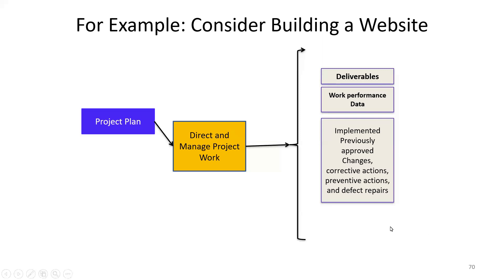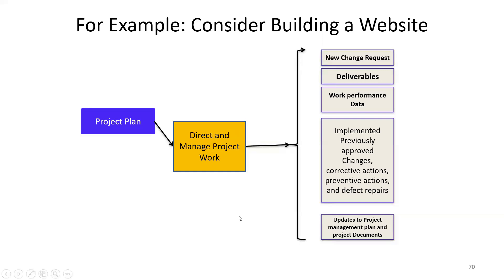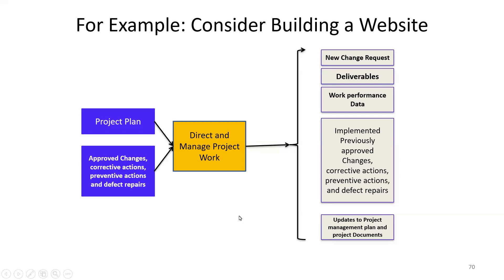As a lot of work gets done, we update project documents and the project management plan. If a new change request comes in, approved changes, corrective actions, and preventive actions become inputs again to Direct and Manage Project Work. For example, on the website someone might request a color change or button repositioning — those are corrective actions. A slow page load or a broken login would be defects to address.